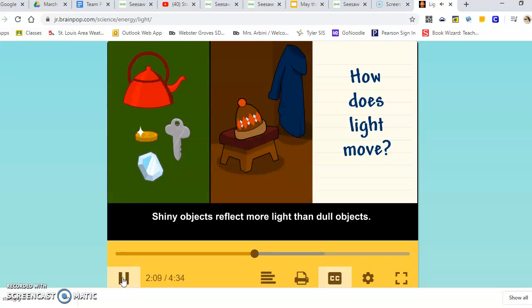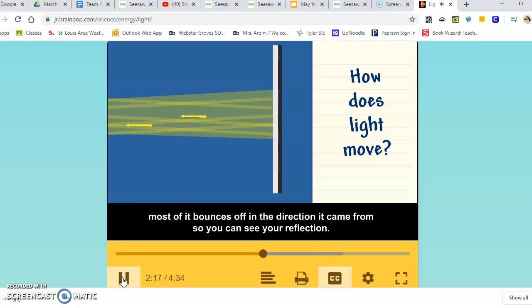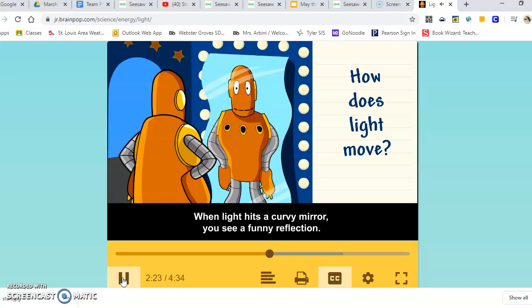Shiny objects reflect more light than dull objects. When light hits a smooth, flat mirror, most of it bounces off in the direction it came from so you can see your reflection. When light hits a curvy mirror, you see a funny reflection.